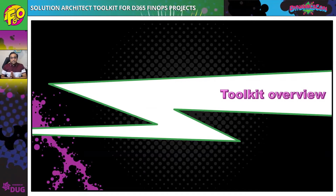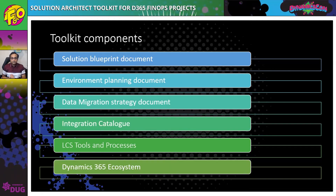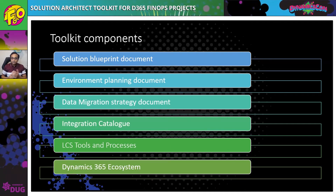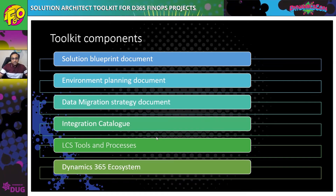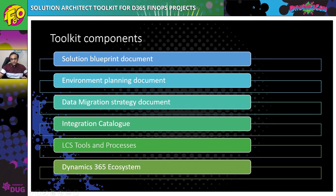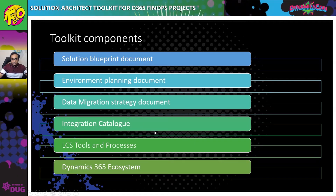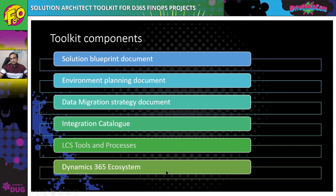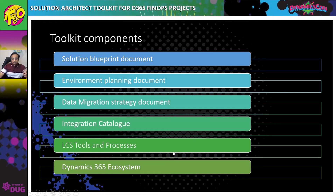Let's look at what the toolkit components are. We are listing some documents, checklists, and templates which a solution architect should keep handy, as these are required in every project and can be asked for at any time. The key documents — and this is not a complete list — include the solution blueprint document, environment planning document, data migration strategy, integration catalog, and an understanding of LCS tools and processes and the wider Dynamics ecosystem.